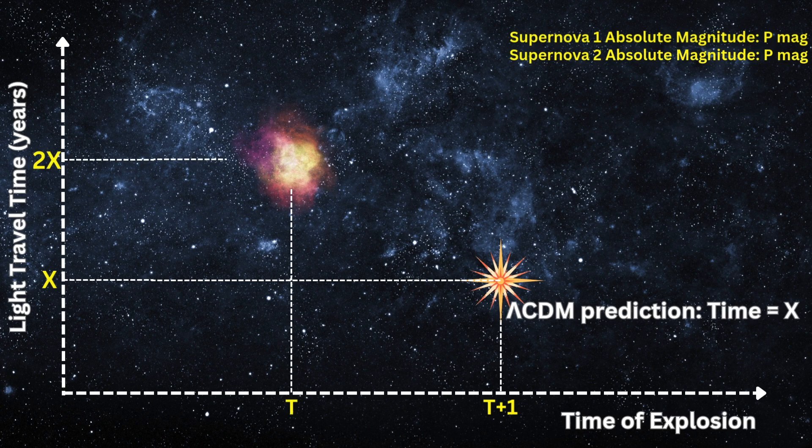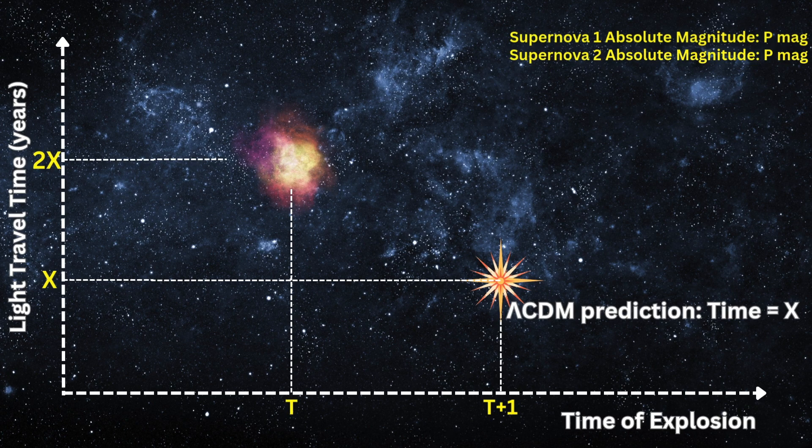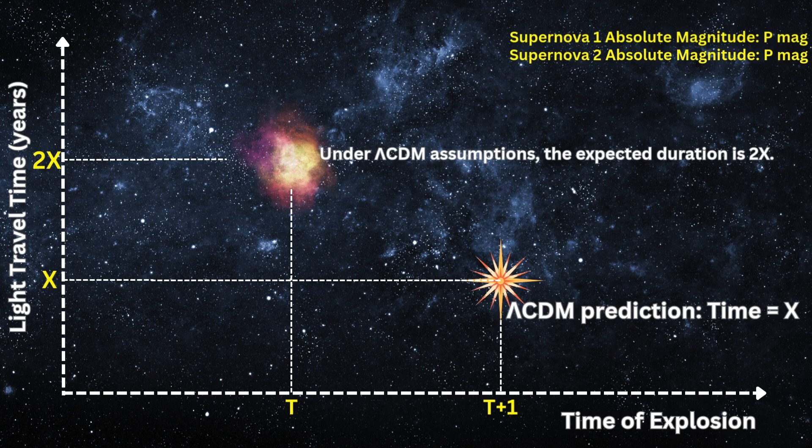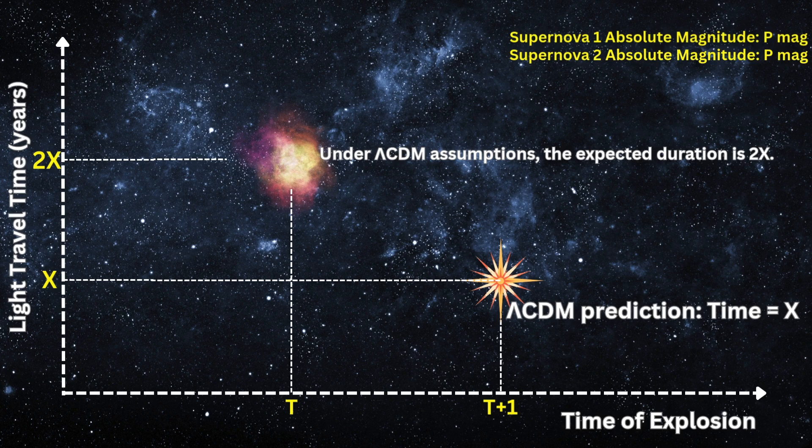Imagine another Type Ia supernova with the same brightness, but this one exploded at an earlier time t. Let's also assume the Lambda-CDM model is correct and we expect that the light from this older supernova should take exactly 2x time to reach us, based on the assumption of constant expansion acceleration.